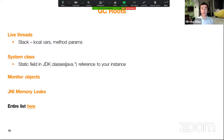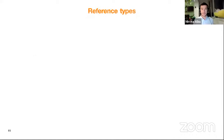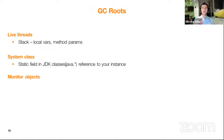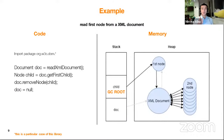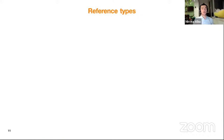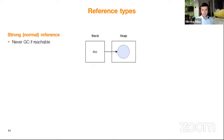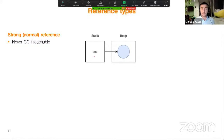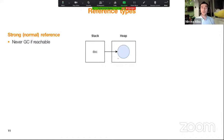Let's talk about reference types. What reference types do you usually use in a normal developer day? The most common is a strong or normal reference — as in the previous example, where the document has a strong reference to the object in the heap. If an object has a strong reference from a GC root, the garbage collector will not clean it up.